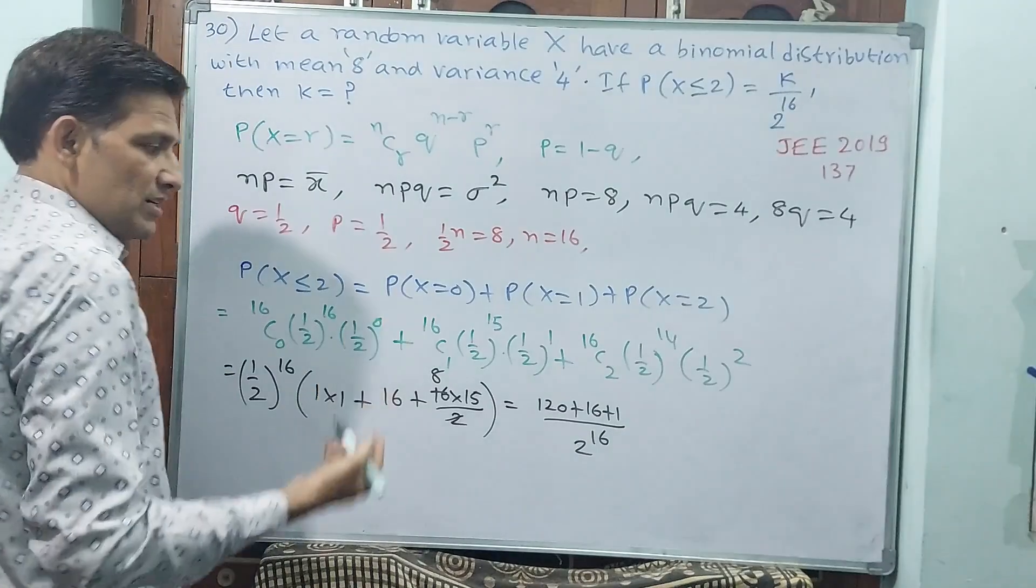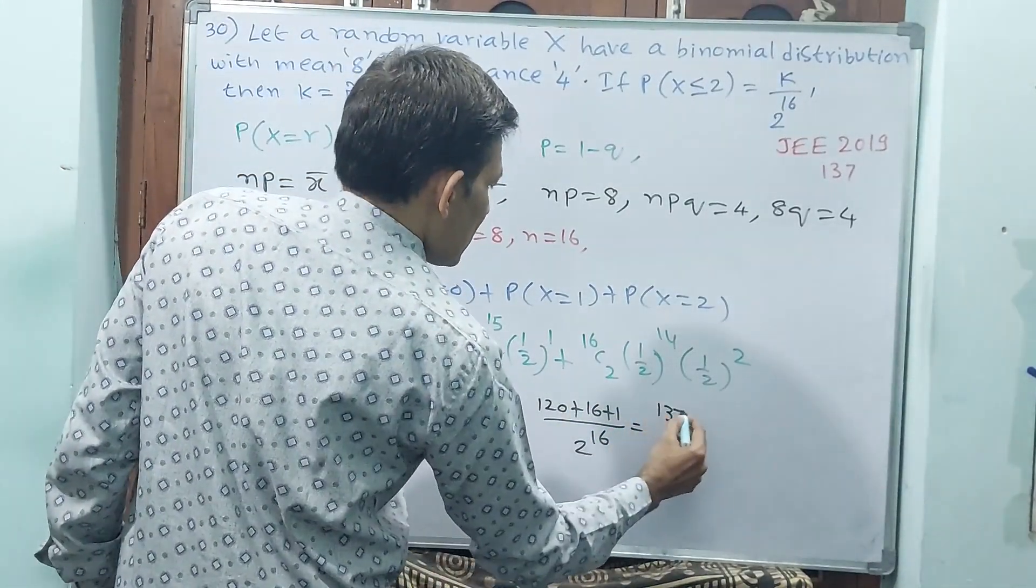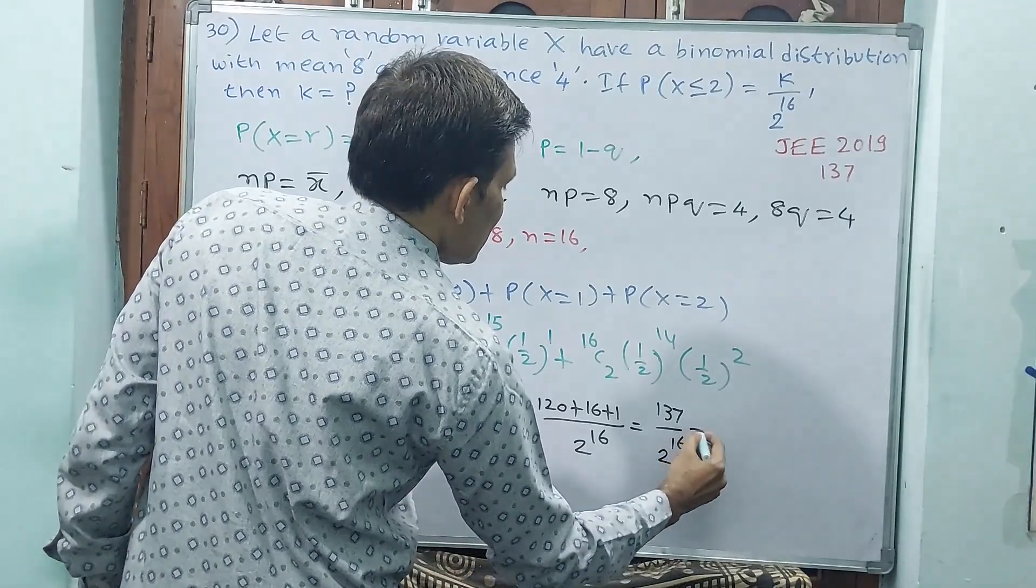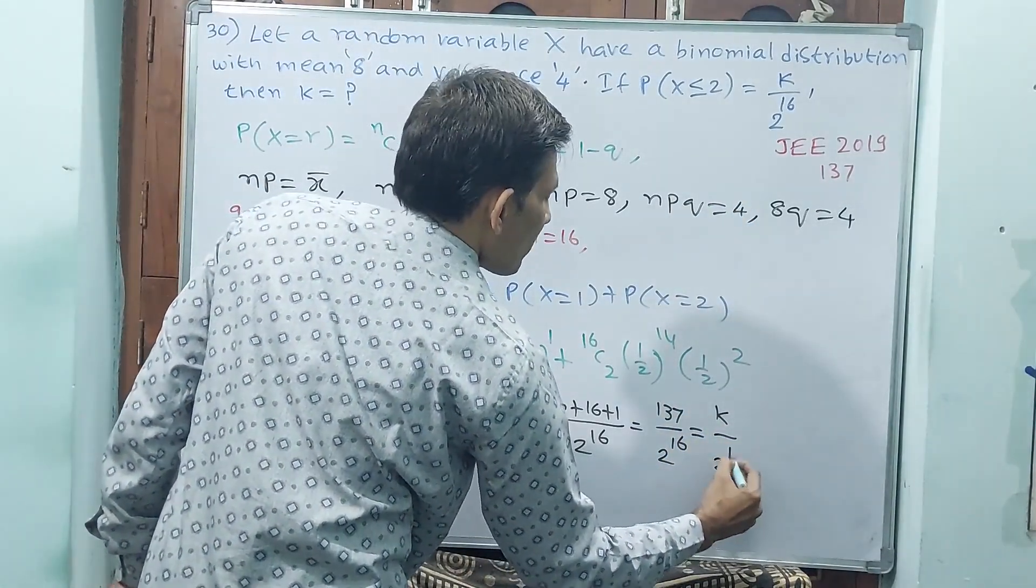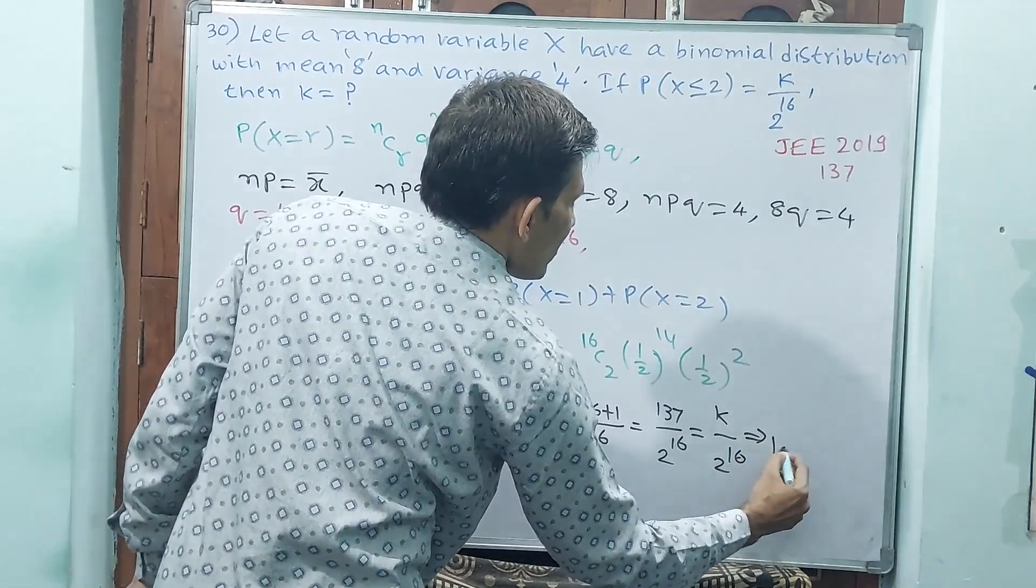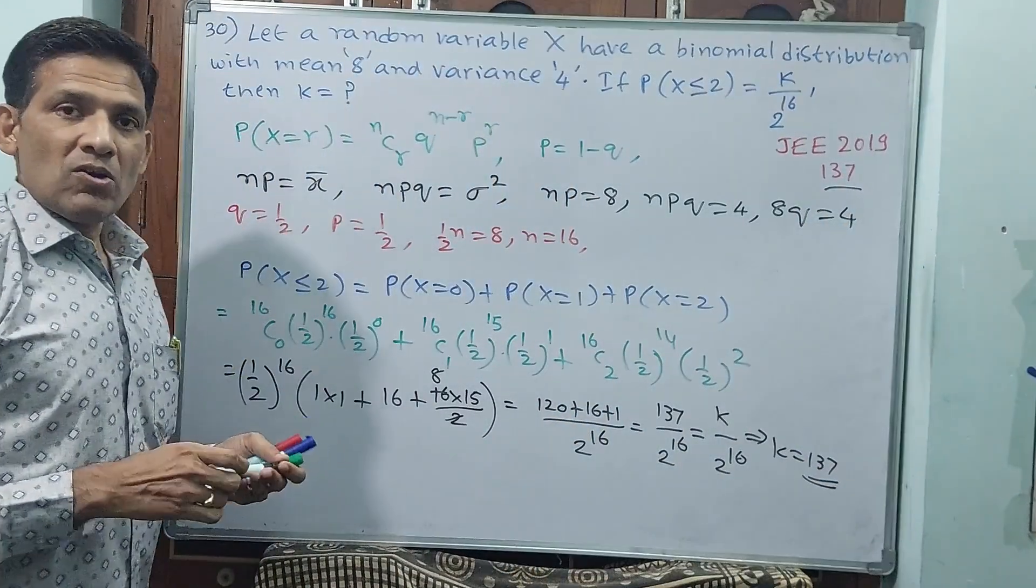See, this equals the given argument k/2^16. Therefore, k = 137, that's all. Now let's go for the next question.